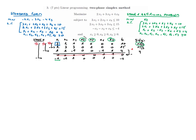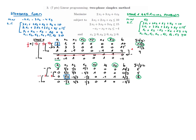We perform elementary row operations to create zeros above and below the new pivot. The multipliers are 2/3, 1/3, 1/3, and minus 1/3. We also multiply the pivot row by 1/3 to normalize the pivot to 1. After these row operations, we obtain the updated tableau.